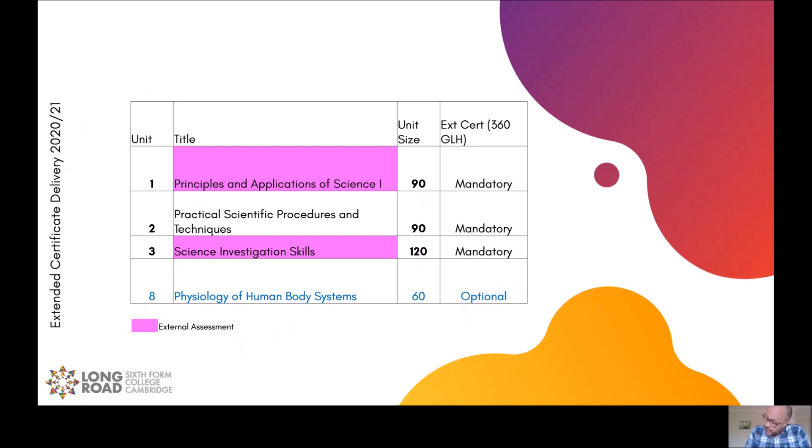Unit two is a chemistry based unit where you will carry out a number of practical skills. So you'll calibrate a number of pieces of equipment. You will prepare and standardize solutions. You will carry out titrations involving acid and bases. You will do chromatography on plants and amino acids. You'll carry out a technique called calorimetry. And you'll do a brand new technique called colorimetry.